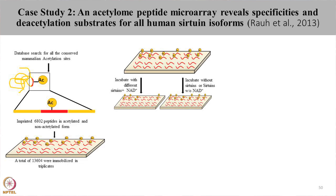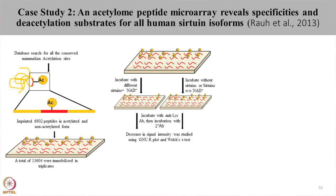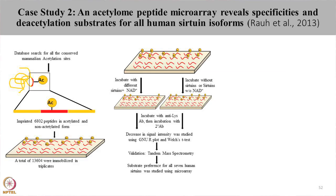These peptide arrays were further incubated with different isoforms of sirtuins and without sirtuins, and also with and without NAD to check for the activity of sirtuins. These peptide arrays were further probed with primary and secondary antibodies to look for the change in the level of acetylation upon incubation with sirtuins. The decrease in signal intensity of acetylation was calculated using Welch t-test. These acetylation patterns were also validated using mass spectrometry, resulting in identification of substrate preferences for different sirtuin isoforms.